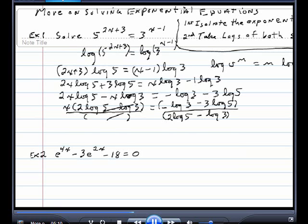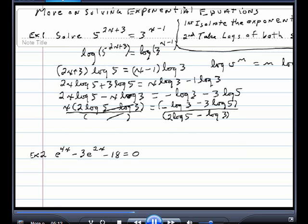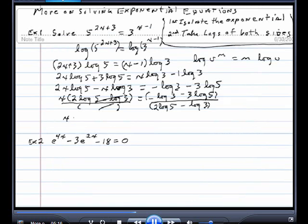So this thing is now ready to go into our calculator just like it is. We'll enter into our calculator x is equal to open negative the log of 3 minus 3 log of 5 close divided by open 2 log 5 minus the log of 3.